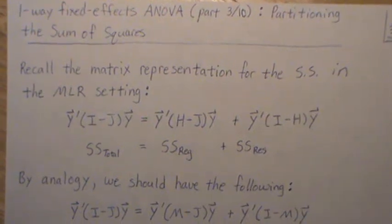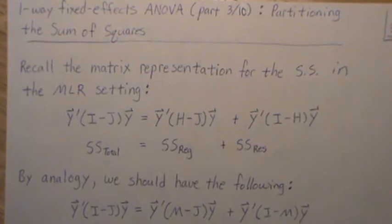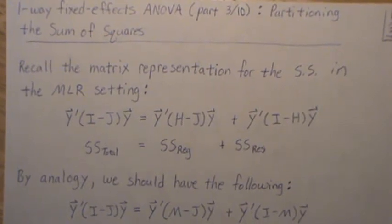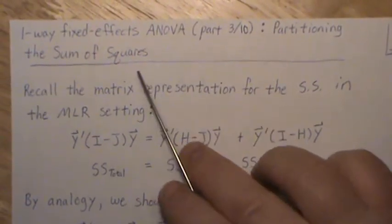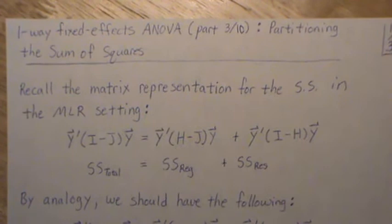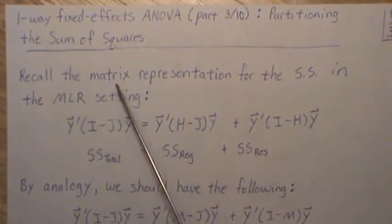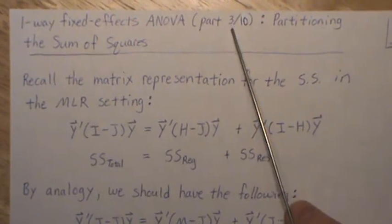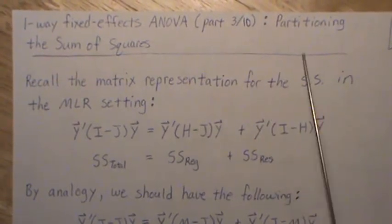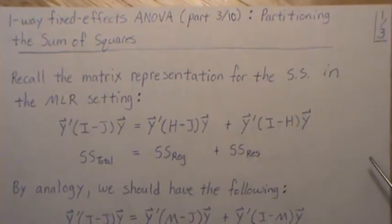Hello, this is the next video in a playlist titled General Linear Models Design of Experiments. This is part 3 in a mini series within that playlist dealing with one-way fixed effects ANOVAs. Here in part 3 of 10 we're going to look at partitioning the sum of squares.